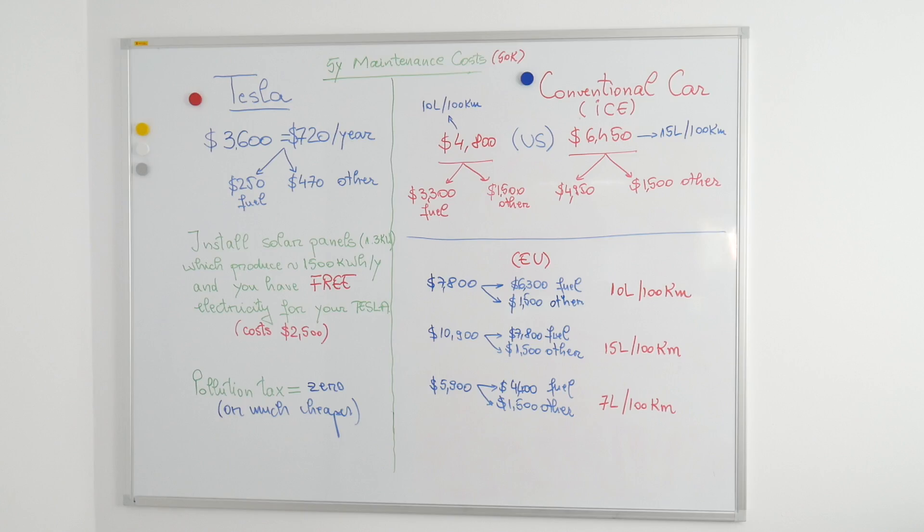Now, to be honest, in Europe, the average fuel consumption is around 7 liters per 100 kilometers or even lower, so you need around $1200 per year, but keep in mind this, it won't be as fast as a Tesla.